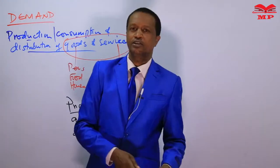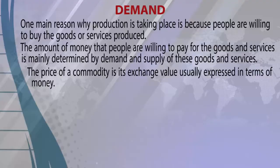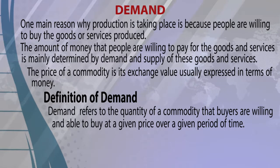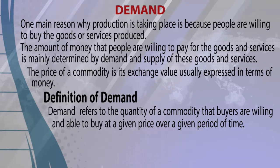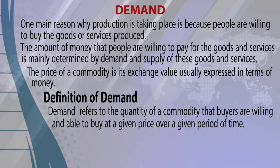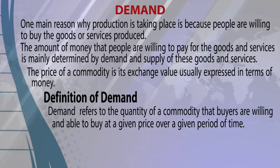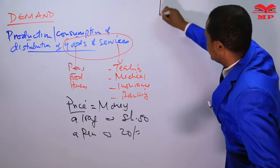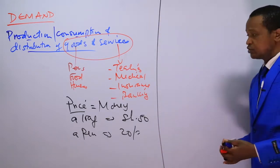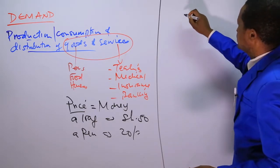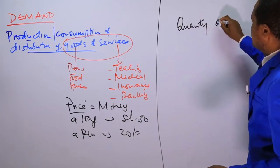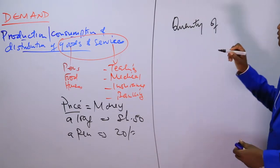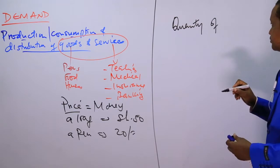What then is the definition of demand? Demand refers to the quantity of a commodity that buyers are willing and able to buy at a given price over a given period of time. So demand is the quantity of a commodity or service that buyers are willing and able to purchase at a given price over a given period of time.